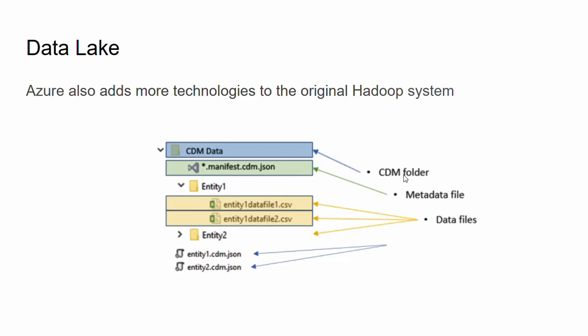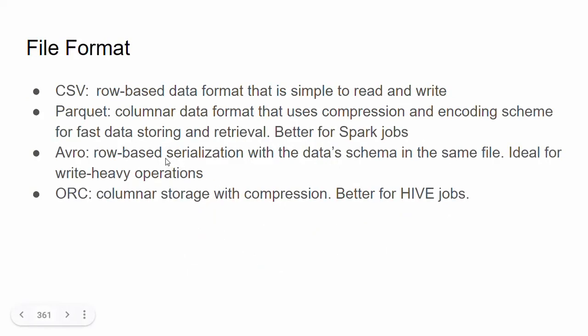Azure adds more technology on top of the original Hadoop system. When it's described as HDFS, it's not exactly HDFS — it's HDFS modified for Microsoft's purposes. Files stored in a data lake can have very different formats; the four most popular are CSV, Parquet, Avro, and ORC. Data lake implementations like Apache Hadoop, Databricks Delta Lake, and Azure Data Lake hide away these format details from us. For this course, we are just going to use CSV.